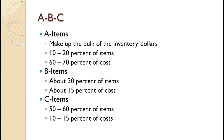B inventory items are less important from a cost perspective than A items. However, they have a value high enough to be managed closely. Typically they make up about 15% of the cost and about 30% of the count.